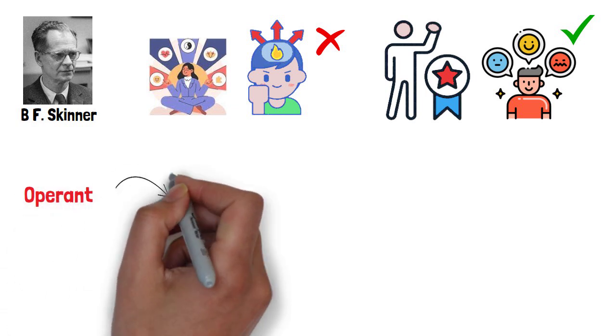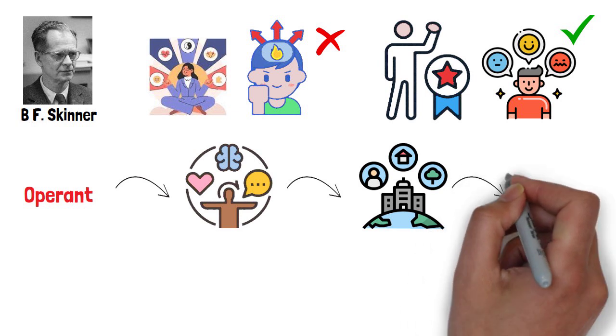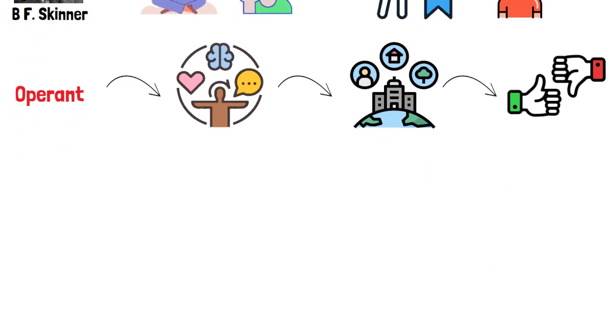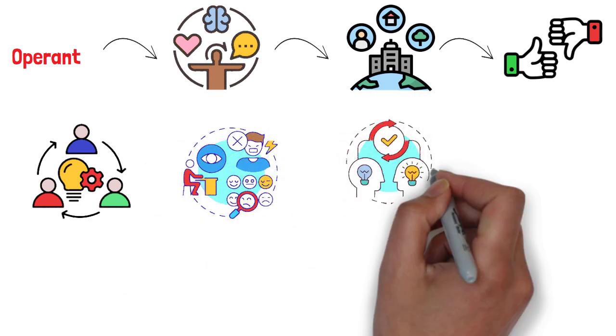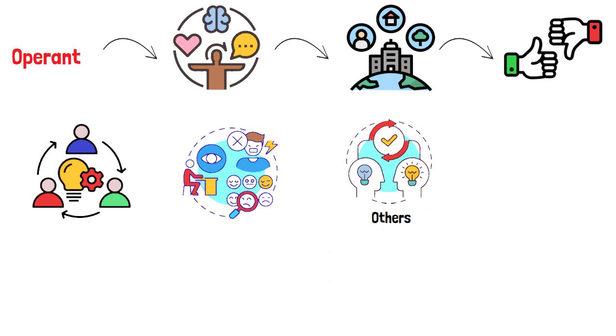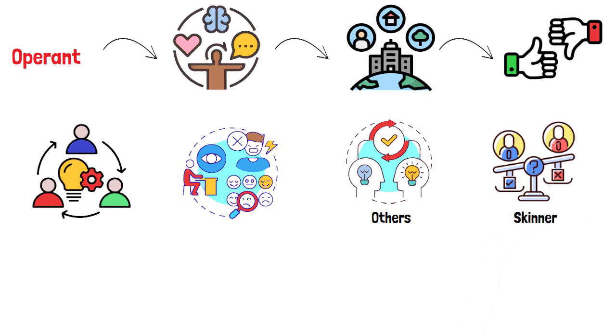Skinner used the term operant to refer to any active behavior that operates upon the environment to generate consequences. Skinner's theory explained how we acquire the range of learned behaviors we exhibit every day. Skinner was more interested in how the consequences of people's actions influenced their behavior.